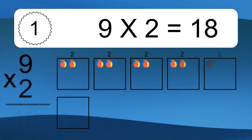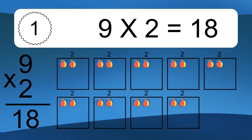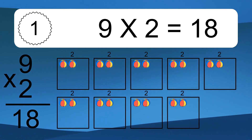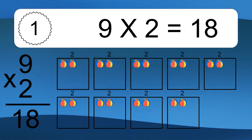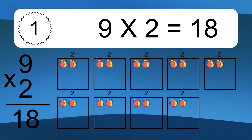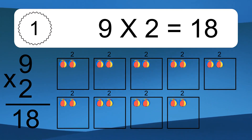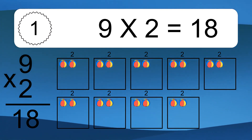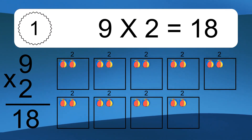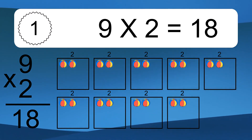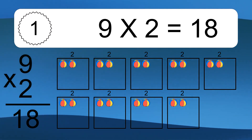9 times 2 equals 18. We have 9 boxes, and each box has 2 colorful balls inside. If you count all the balls in all the boxes together, you will have 9 times 2 balls. This equals 18 balls.